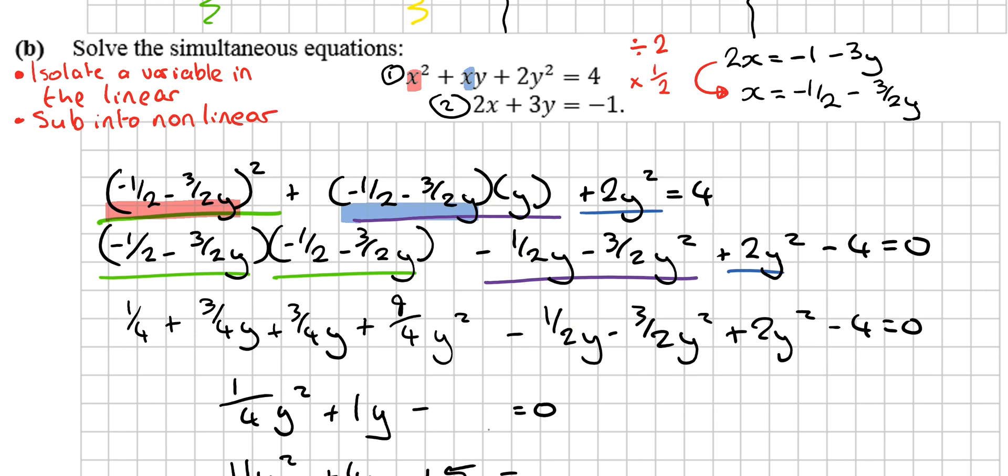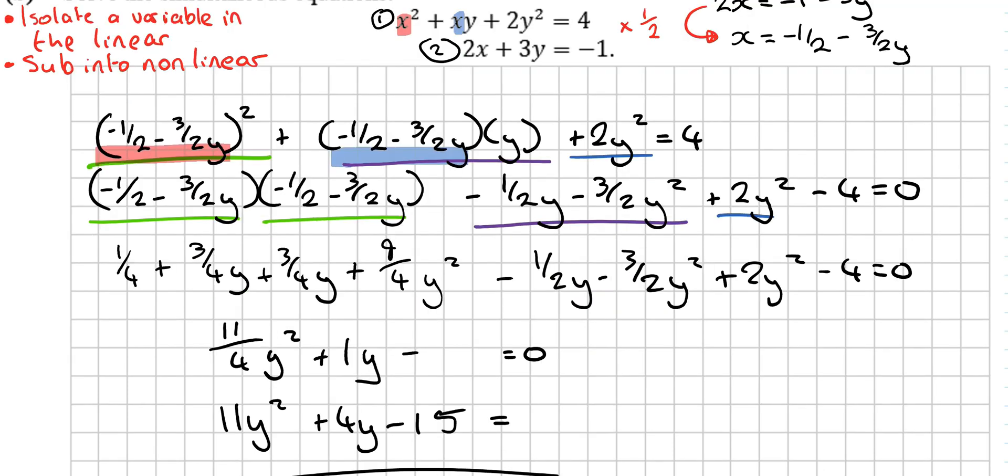Continue working down and continue simplifying. I'm missing something here. Yeah, I'm missing 15 over 4 here. Okay, so continue simplifying it down. And then it's just a matter of grouping like terms. So the y squareds get linked together. The y's get linked. So adding like terms.